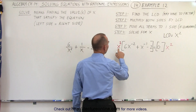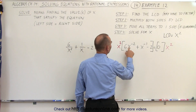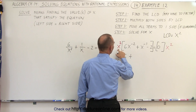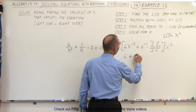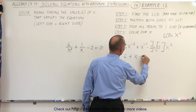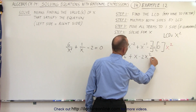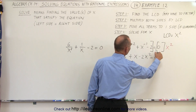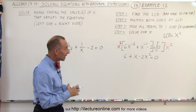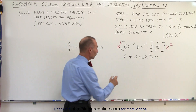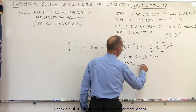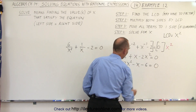Now, when you do that, you get the following: x squared times x to the negative 2 is equal to 1, so you end up with a 6, plus x squared times x to the minus 1 is equal to x to the first power, and x squared times a minus 2 gives you minus 2x squared equals 0, because 0 times anything is still 0. Then multiplying everything by negative 1 and rearranging the terms, we get 2x squared minus x minus 6 equal to 0.